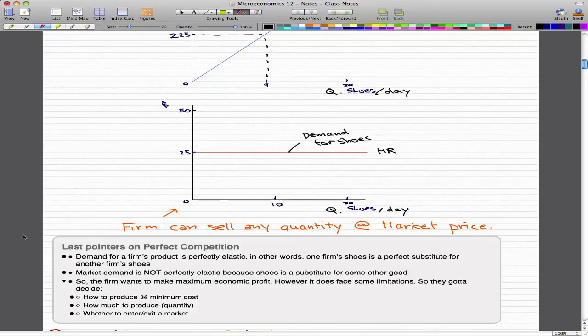Market demand is not perfectly elastic because shoes are a substitute for some other good. In this case, we can't really substitute shoes in general terms because there's no other good substitute other than sandals, but that's not really a good substitute. There's no perfect example such as Nike and Adidas in terms of a more general category such as shoes.